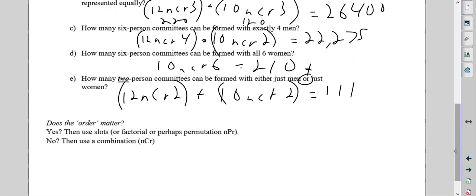So, does order matter? If the answer is yes, you're either going to use slots or NPR, which I would just recommend because it makes life easier. If the answer is no, use NCR. So remember, order also means rank. If there's a rank, yes, NPR. If there's not a rank, NCR.